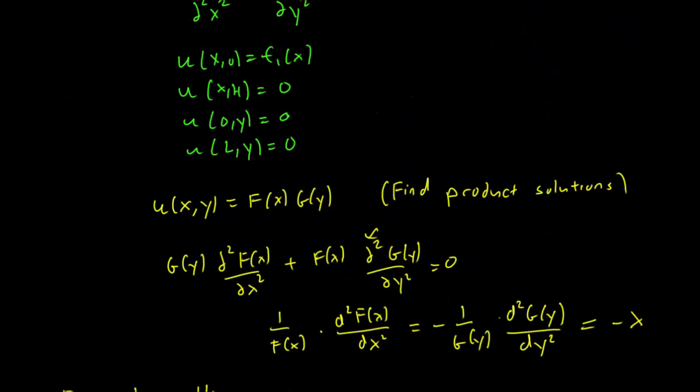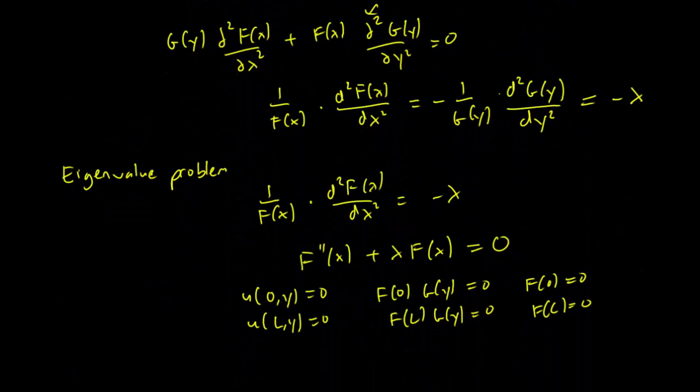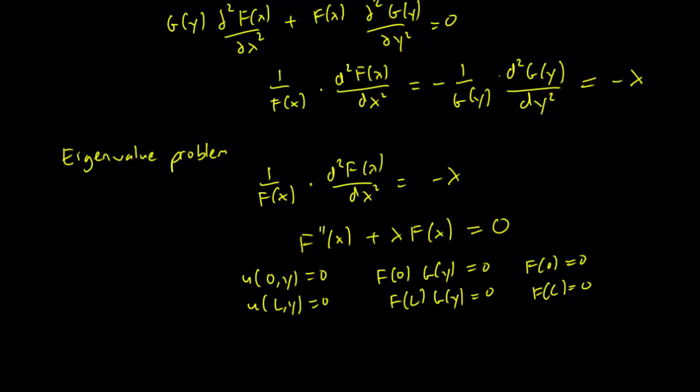Otherwise, g(y) is 0 identically, and that will mean that our solution u is just 0 everywhere, which is silly, a trivial solution. So we have this equation with these boundary conditions.